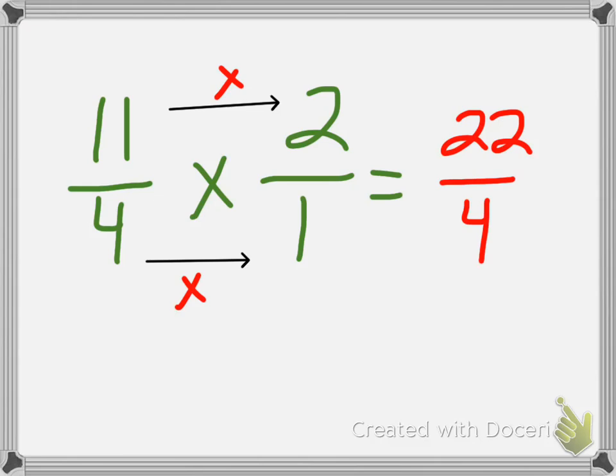So then we have to turn that improper fraction back into a mixed number so we can deal with it, figure out how many cups. Because right now I have no idea what 22 fourths is. That's a lot of fourths that I would have to add into a bowl. So I don't want to do that. So I want to divide.